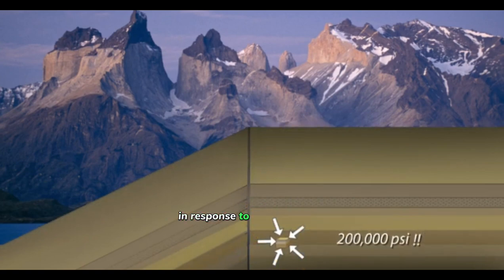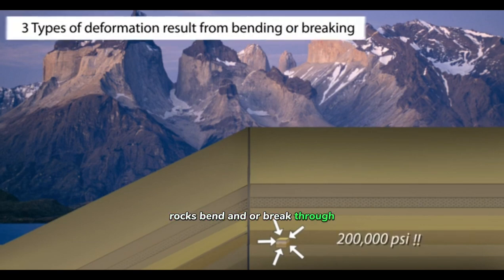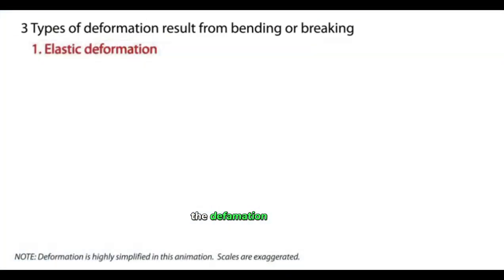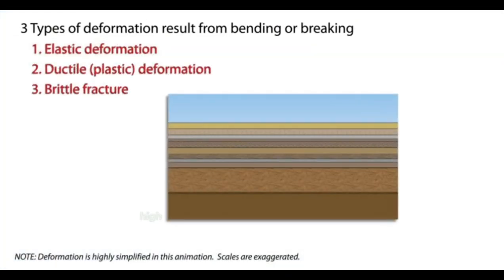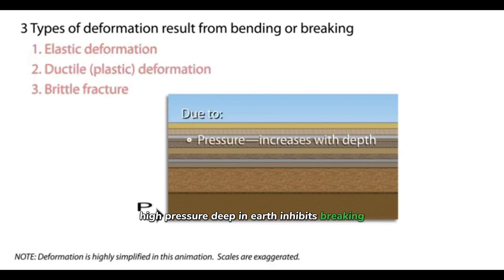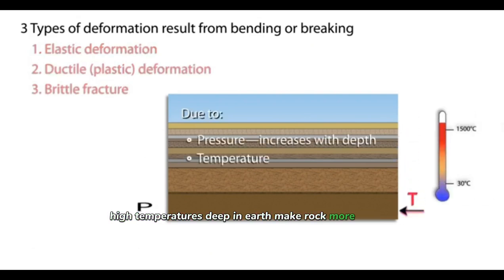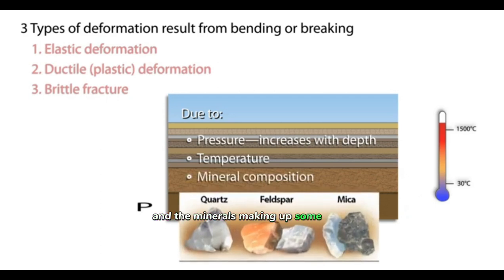In response to extreme stress, rocks bend and/or break through a process called deformation. The following factors control whether the deformation is elastic, plastic, or brittle. High pressure deep in Earth inhibits breaking. High temperatures deep in Earth make rock more flexible. And the minerals making up some rocks make them more flexible than others with a different makeup.